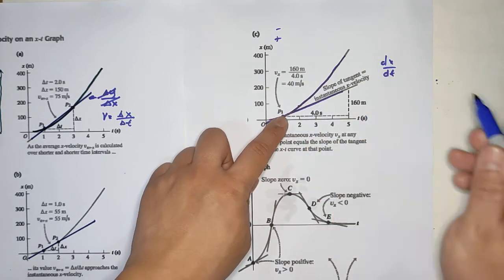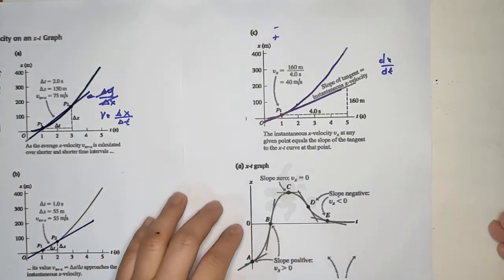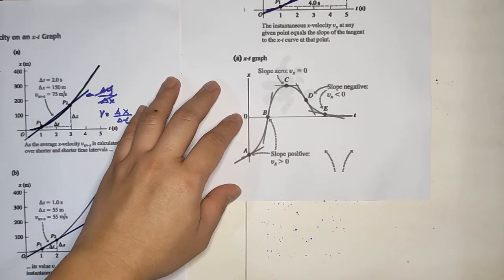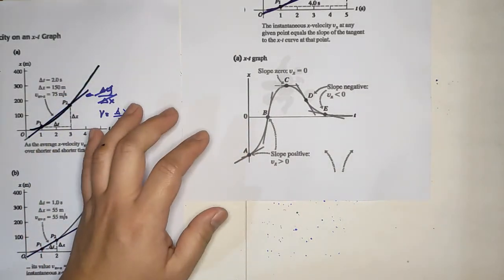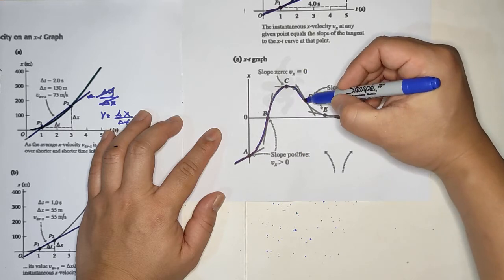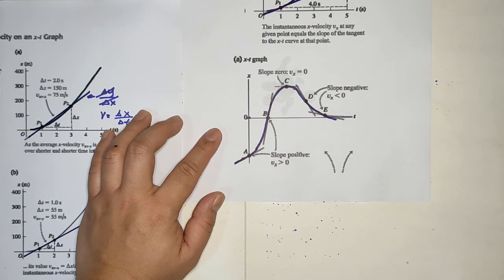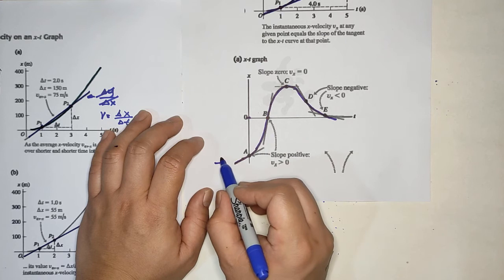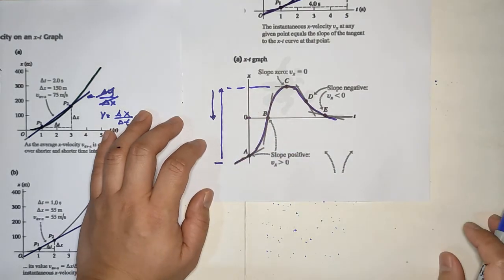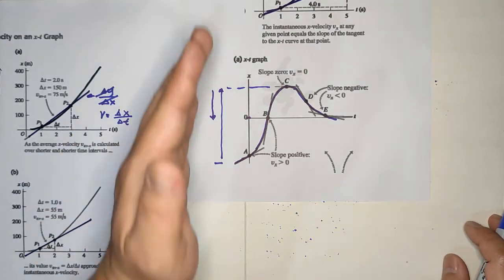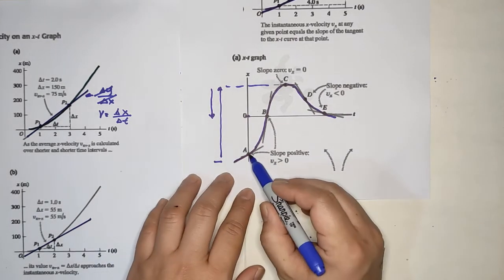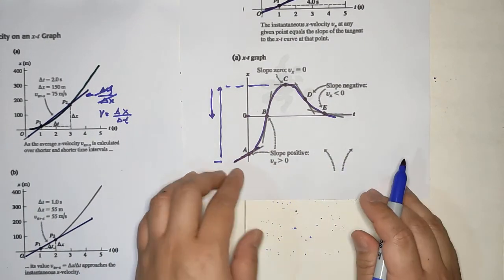Let's look at this graph to explain thoroughly what it means when the slope is negative, zero, or positive. The graph doesn't mean you have to begin at zero distance — in this case the particle began at a negative position, then goes up to the positive region, then moves back down. This graph shows displacement with respect to time.